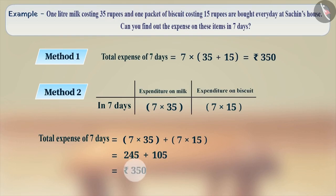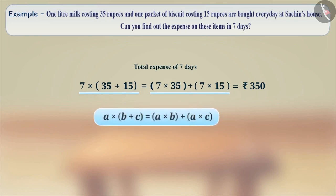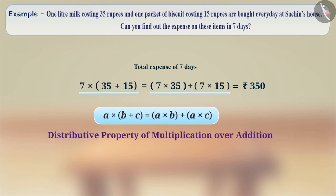Thus, the total expenditure obtained by both methods are the same. In this way, 7 into (35 plus 15) equals (7 into 35) plus (7 into 15). This is the distributive property of multiplication over addition.